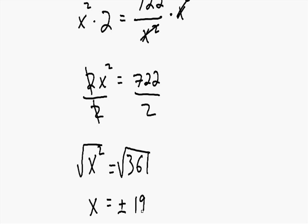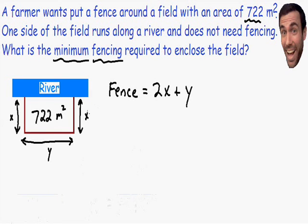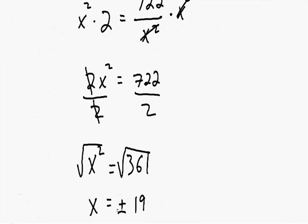Our critical values for x are positive and negative 19. However, x represents a distance, and a distance can never be negative — it must be greater than 0. So the critical value of negative 19 is not possible and we eliminate it. Our only valid critical value is positive 19.